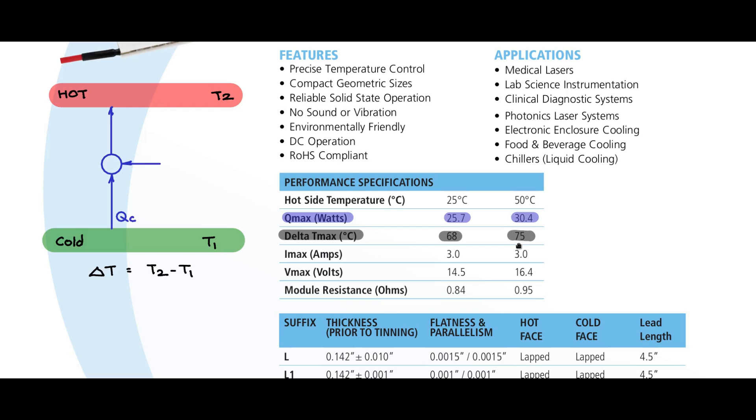So that is also one of the specs. 68 to 75 degrees. So the difference between the cold and hot junction should not exceed 68 to 75 degrees. That is around the maximum that this particular Peltier junction would allow.